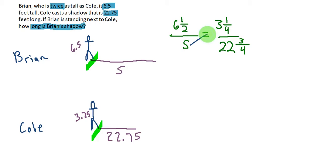Let's go ahead and take the cross-products. I have 3 and 1 quarter times S is equal to 6 and 1 half times 22 and 3 quarters. Well, before we move forward with multiplying these values, we've got to take these mixed numbers and turn them into improper fractions.